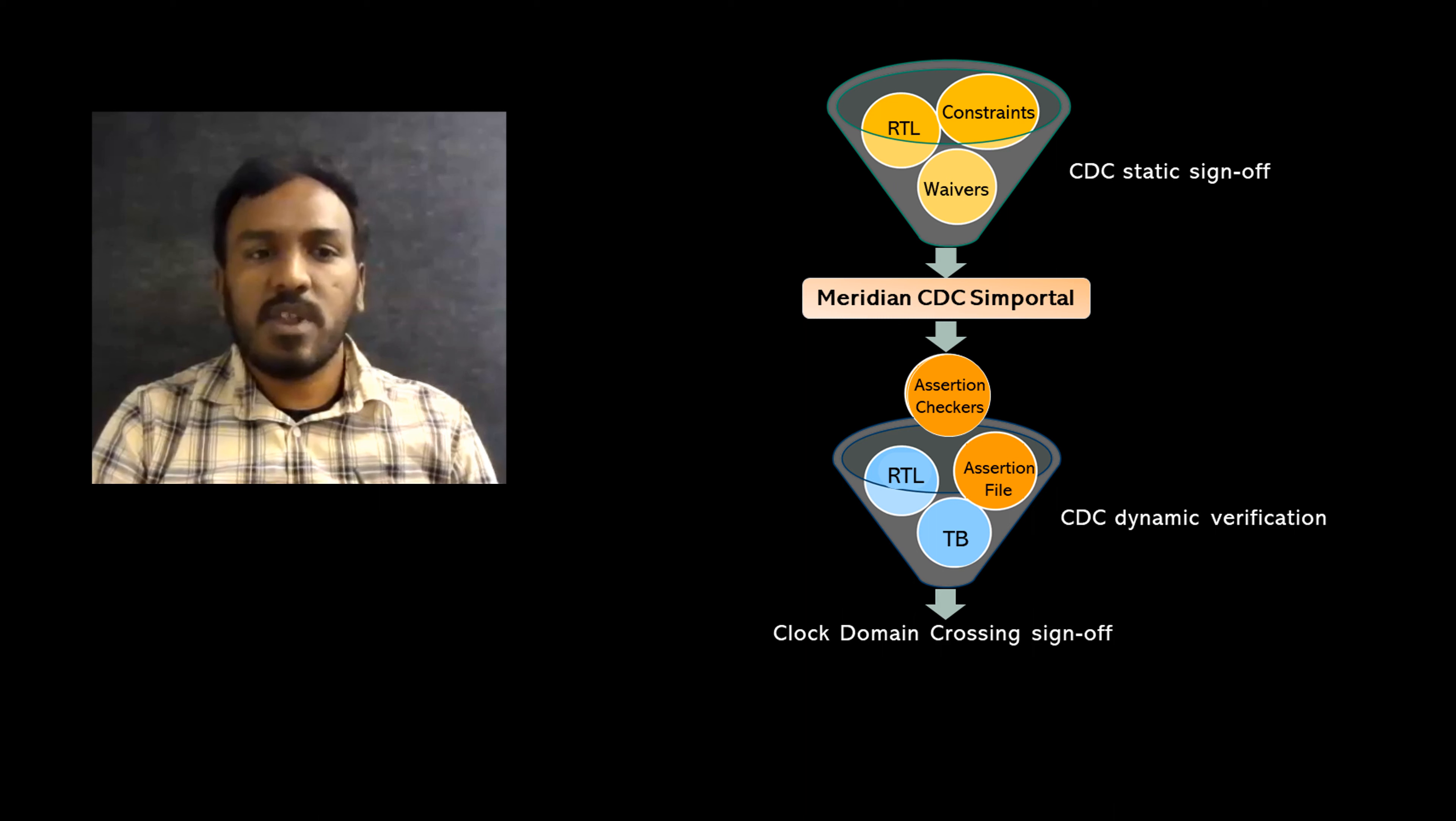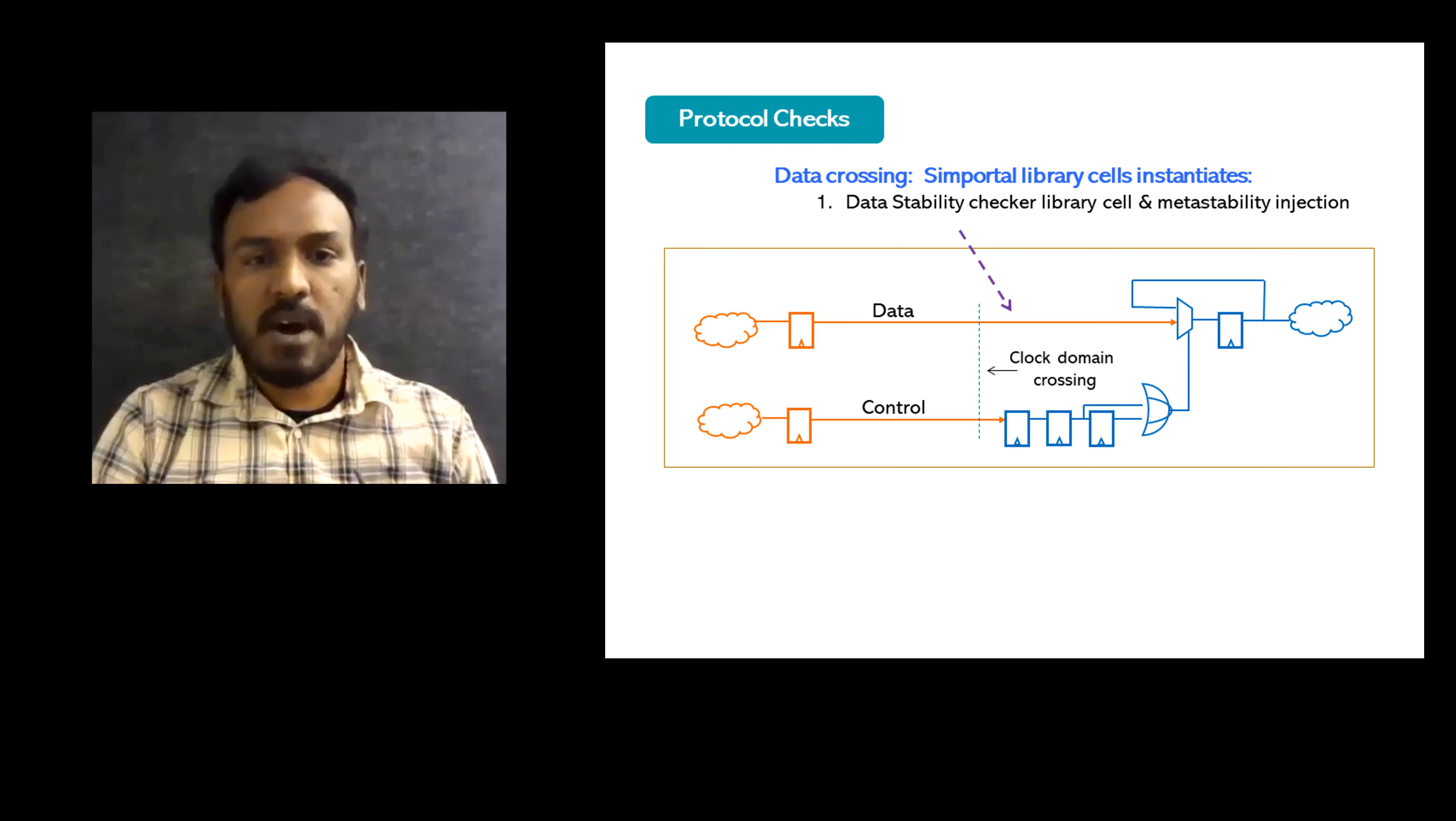Each assertion is designed to verify a certain protocol or assumption from our CDC static sign-off world. On the protocol side, for data paths, there is a data stability checker at the data crossing to confirm that the transmit data is stable long enough to be captured on the receive side.